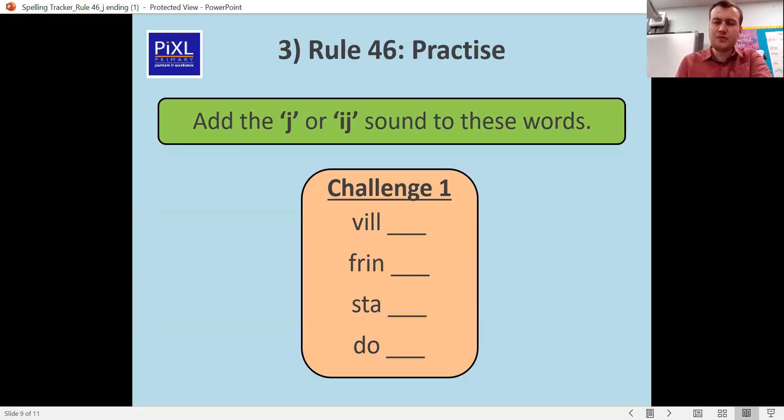Village, fringe, stage and dodge. So well done if for village you realize there's that itch sound and it's two syllables so A-G-E at the end. For fringe because it's an N that's not a vowel, so just a G and an E. For stage because we're saying that A sound, stage, it's just a G and an E. And for dodge the O is on its own and it's the O not the O, so it's D-G-E. So we need a D for dodge.